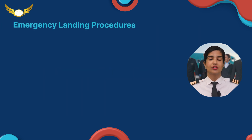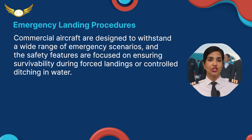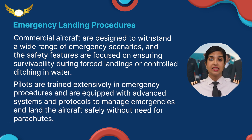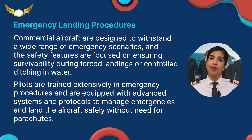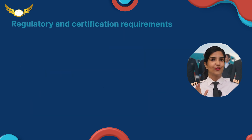4. Emergency Landing Procedures. Commercial aircrafts are designed to withstand a wide range of emergency scenarios, and their safety features are focused on ensuring survivability during forced landings or controlled ditching in water. Pilots are trained extensively in emergency procedures and are equipped with advanced systems and protocols to manage emergencies and land the aircraft safely without the need for parachutes.